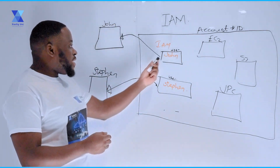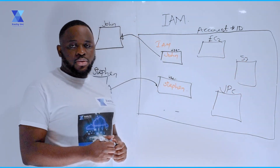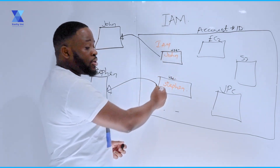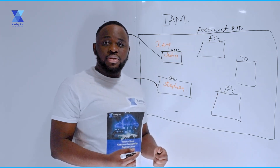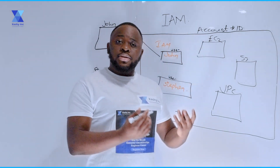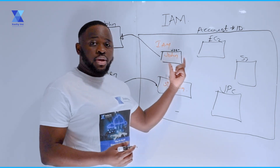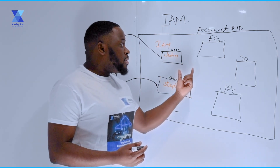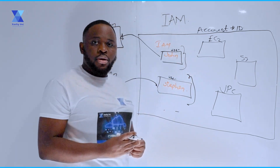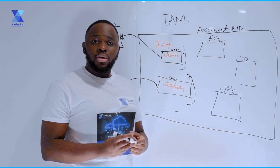When John and Stephen actually have access to their account, it doesn't mean they can access the resources or services in that account. With AWS IAM, you have to give John or Stephen access to resources or services through the use of policies. That is why we say IAM governs both authentication and authorization — when a user is authenticated, they don't automatically have access to any resources. For that to happen, you must assign a policy to that user, and based on what's in that policy, it defines what the user can or cannot do in the account.